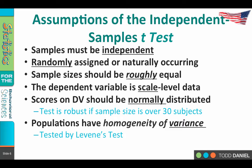Our dependent variable has to be at the scale level — there is no negotiating on this. It must be at the scale level. If it's not, we can't use an independent samples t-test and will have to use a non-parametric alternative.